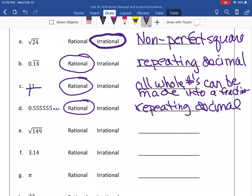Letter E. The square root of 149. Is that a perfect square? No, no, no, it is not. So, irrational it is. And our explanation for it is non-perfect square.